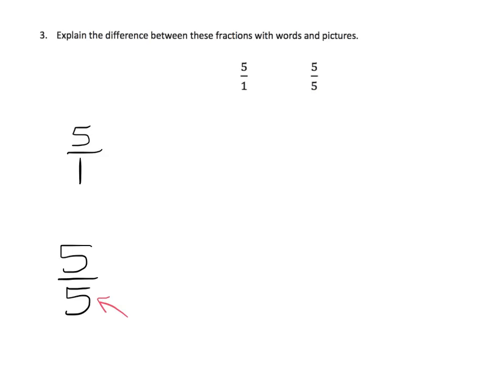Our last slide: explain the difference between these two fractions — five over one and five over five. Five ones, or five wholes, and five fifths — what's the difference? The denominator means the whole number has been cut into that many pieces or parts in one whole. So five over five means the whole has been cut into five pieces.